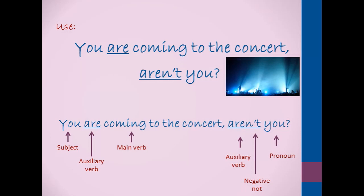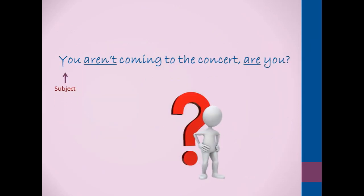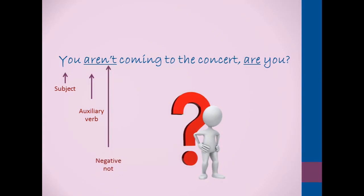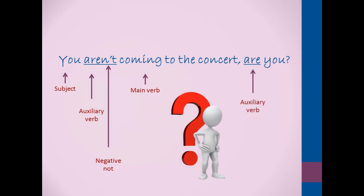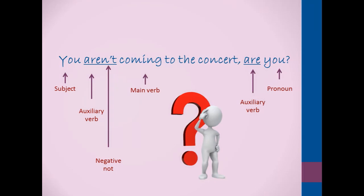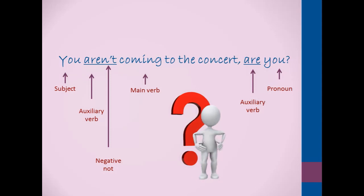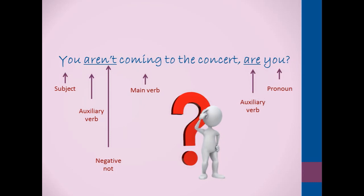So if we change the statement to a negative, watch what happens to the question tag. 'You aren't coming to the concert, are you?' We have the subject, the auxiliary verb plus negative 'not,' and the main verb. The question tag is formed with an auxiliary verb and the personal pronoun. The statement and the question tag need to be opposites: if the statement is positive, then the question tag is negative, and if the statement is negative, then the question tag is positive. Pay attention to the statement — you need to know if it's positive or negative in order to make your question tag correctly.